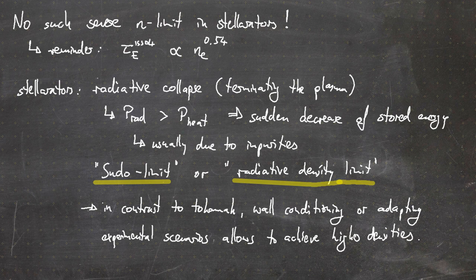That's it for video number 19, where we talked about an important additional density limit in tokamaks — the so-called Greenwald density limit — something which is not completely understood and thus still a topic of active research. When we pass the density limit we usually get a disruption in the tokamak, something we want to avoid. Interestingly, this limit does not appear in a stellarator; instead, stellarators have a radiative collapse if the density gets too high, but we can reduce that by tuning the operational scenario or by proper wall conditioning. So this is not such a severe limit, and we can push stellarators to much higher densities. Hope to see you in the next video.